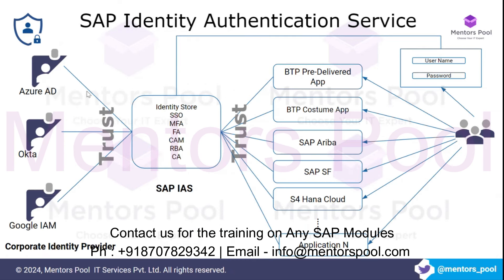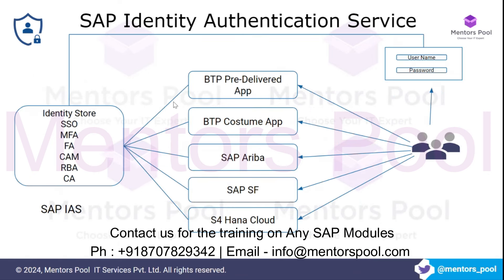There are two use cases. The first use case is where IAS is used as the main identity provider, meaning IAS does everything. All user data is stored in IAS, trust is created between the application and IAS, and whenever users try to log in, IAS searches the user record in its identity store and if successful, authenticates them. Full sole storage is in IAS only.